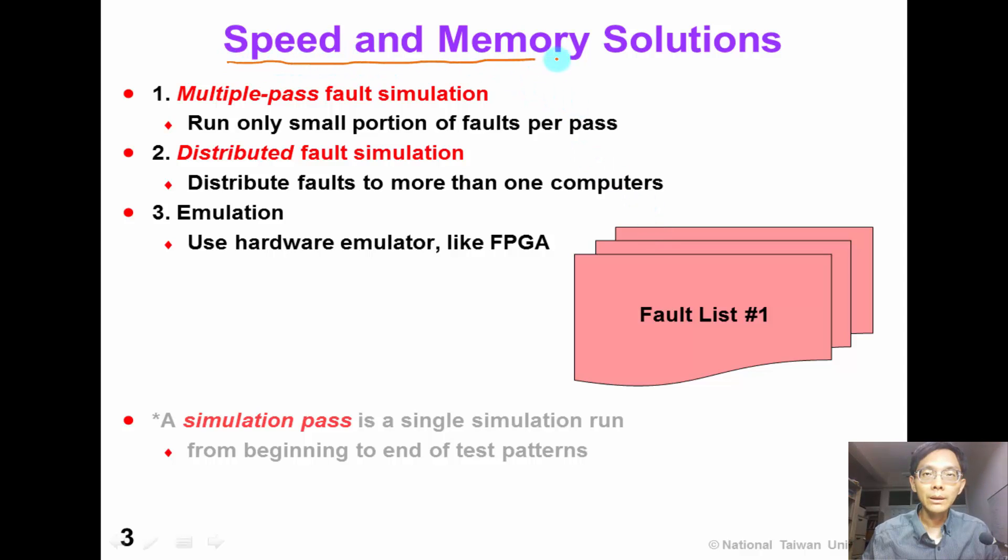To solve the runtime and memory problem, we can divide the big fault list into smaller partitions and run each partition one at a time. This is what we call multiple-pass fault simulation. A simulation pass is a single simulation run from the beginning to the end of the test pattern.